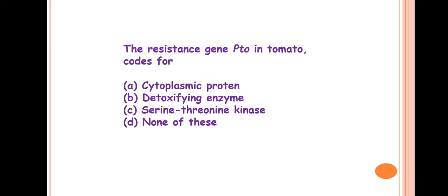Next question is: the resistance gene Pto in tomato codes for? So the answer is B, detoxifying enzyme. Pto is a resistance gene which imparts resistance against bacterial speck disease of tomato that is caused by Pseudomonas syringae pv. tomato. How is this R gene acting? The mode of action is it produces detoxifying enzymes to inhibit or to detoxify the toxin produced by the pathogen. So this Pto resistance gene produces detoxifying enzymes.